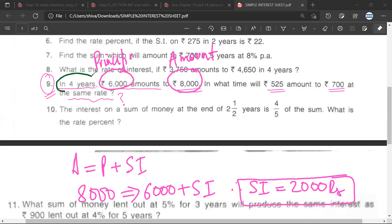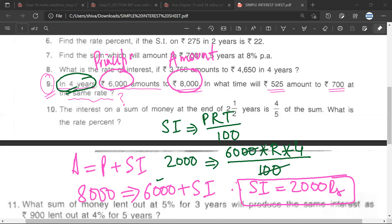So 2,000 equals 6,000 into r into 4 upon 100. The simple interest equals the principal 6,000 into r into t. T is four years, 4 upon 100. Is it correct? Yes sir. Double zero will cancel.